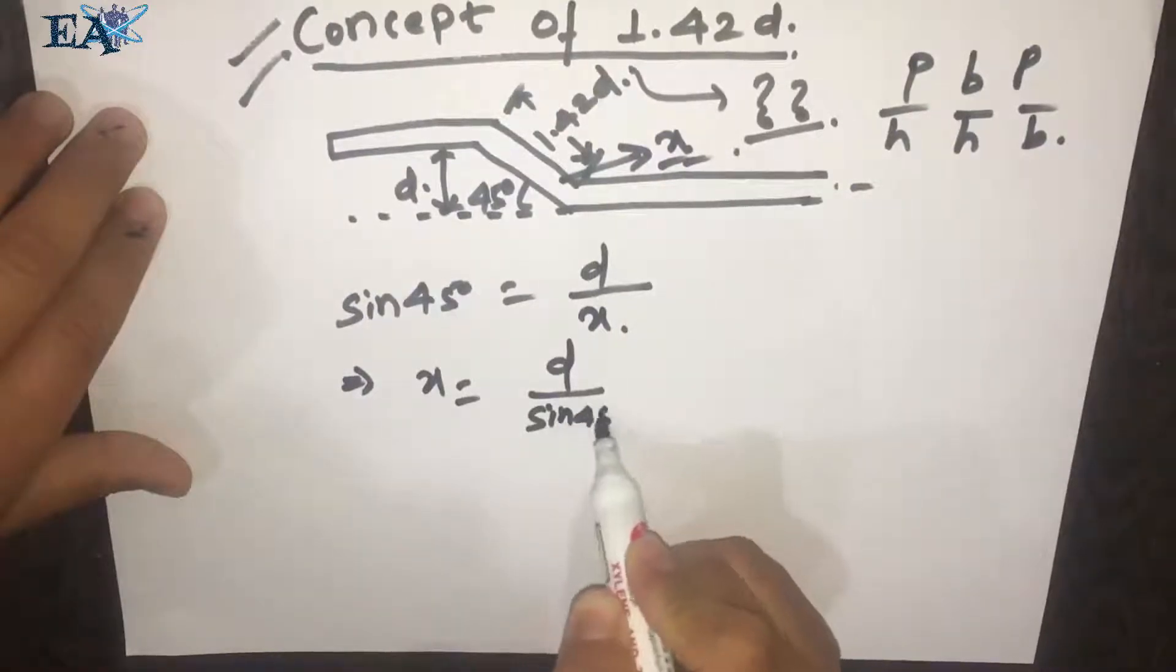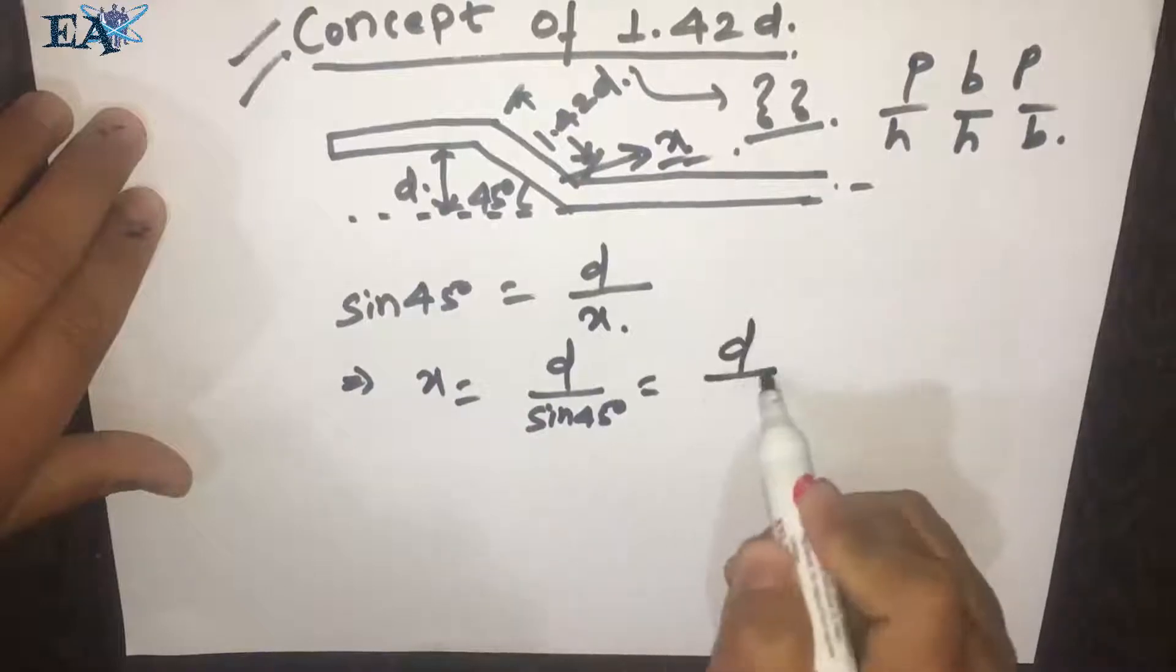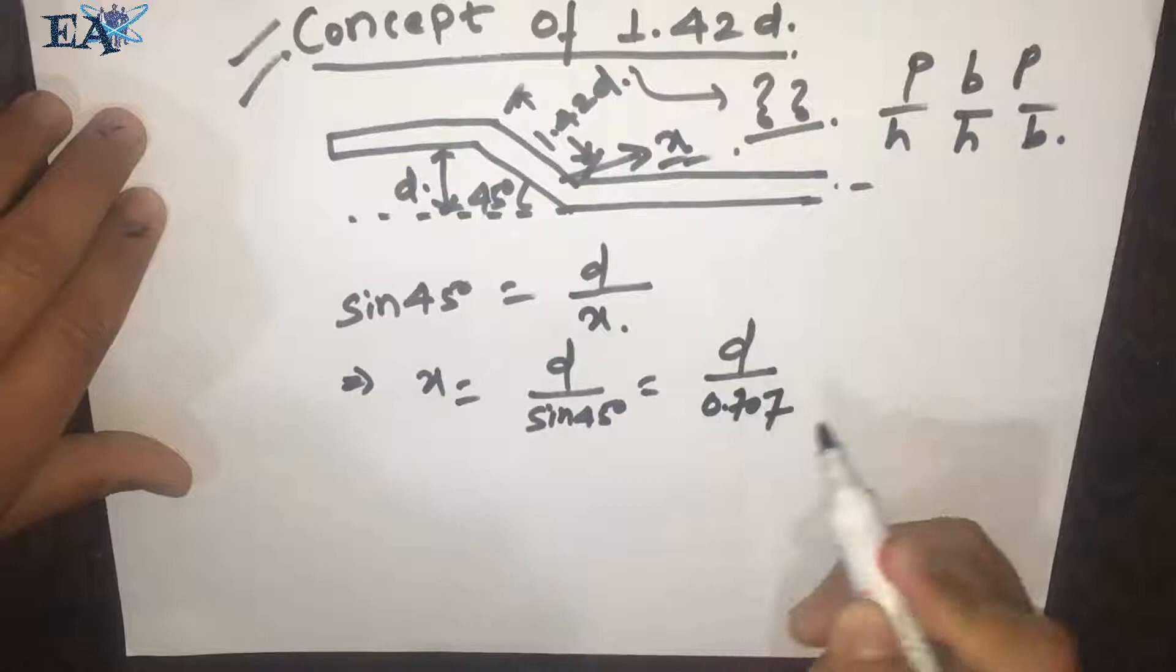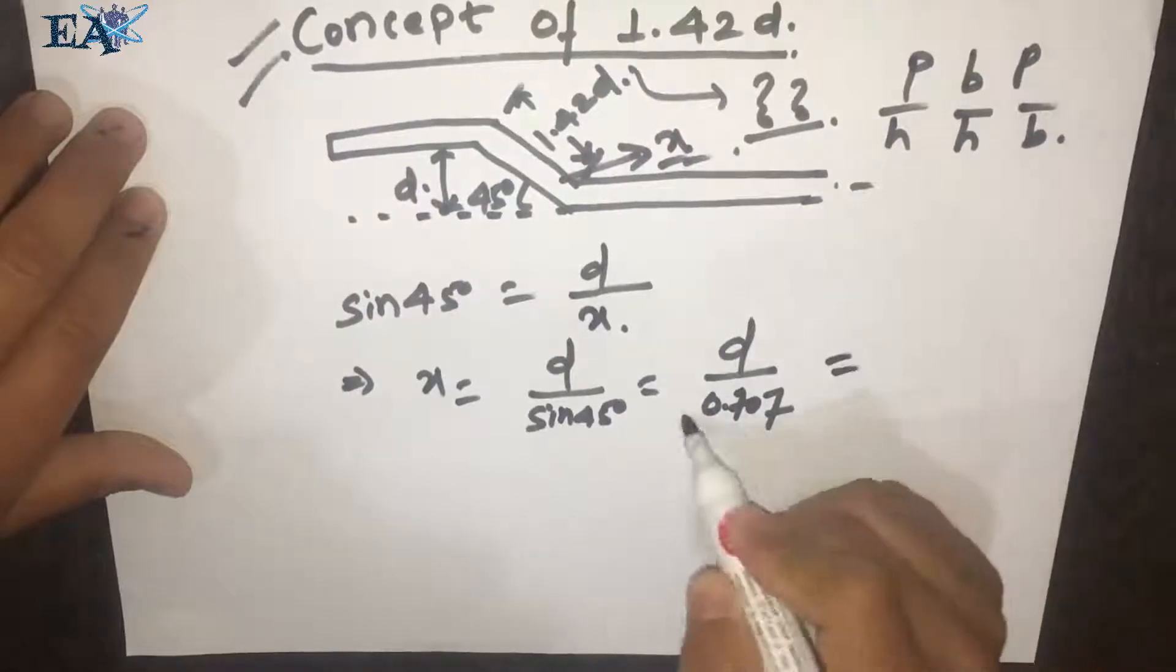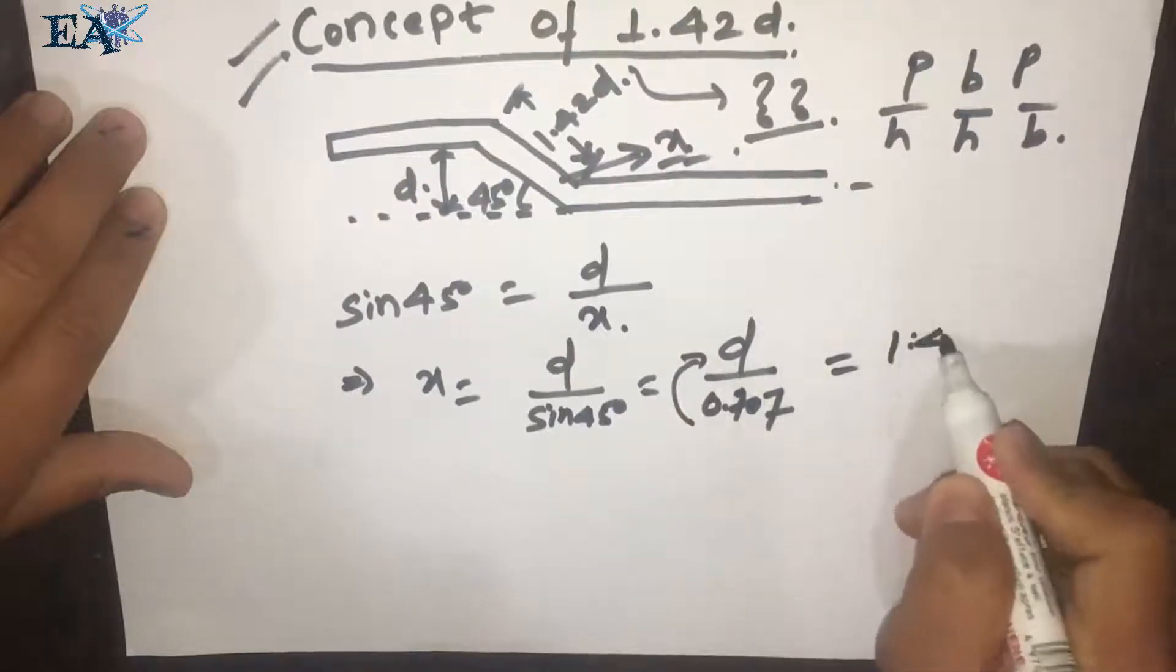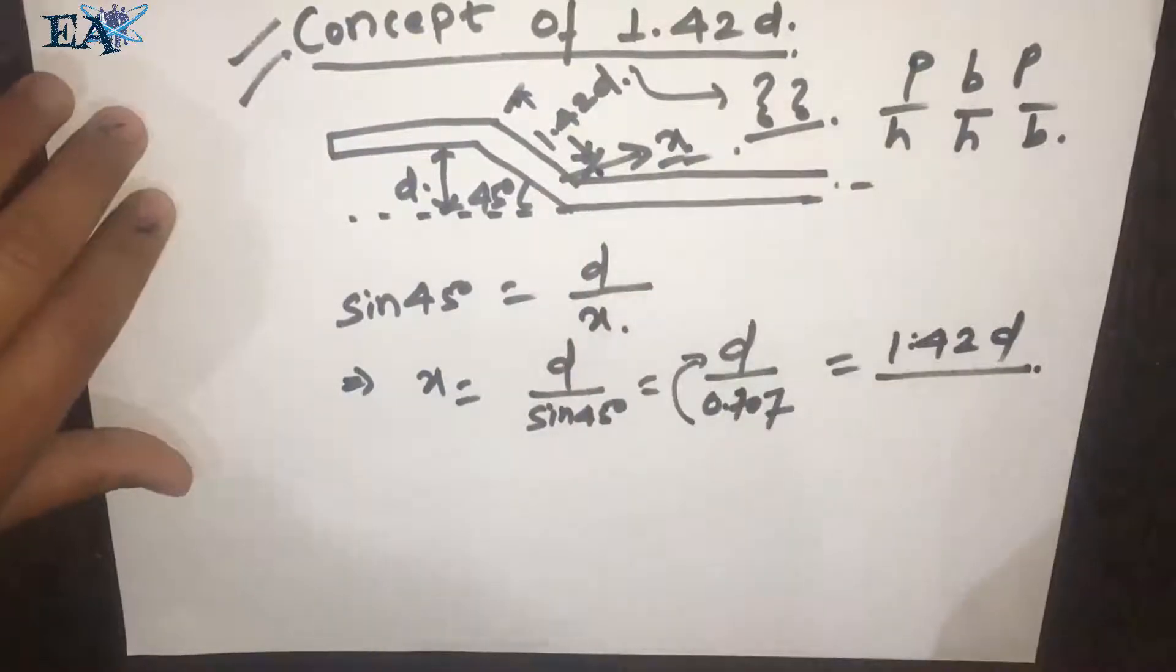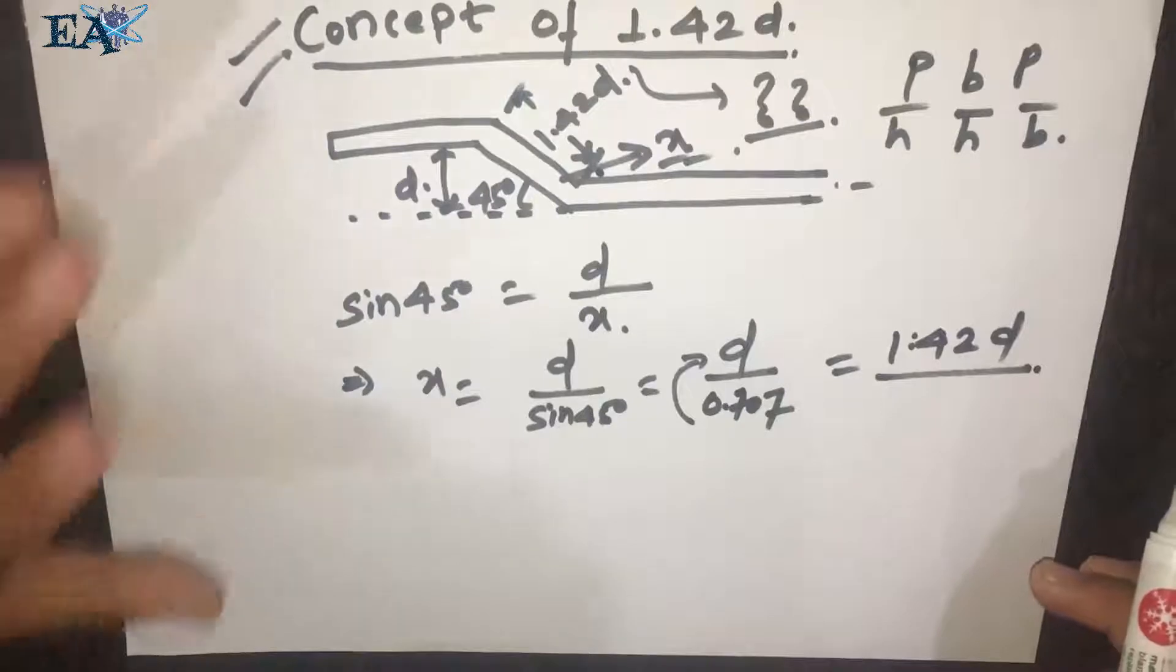If you do sine 45 in the calculator, you'll find 0.707. So if we take 707 up, it's 1.42D. This is how this length over here is 1.42D.